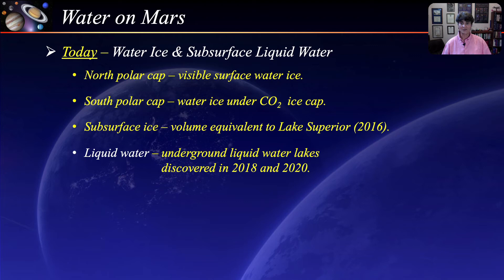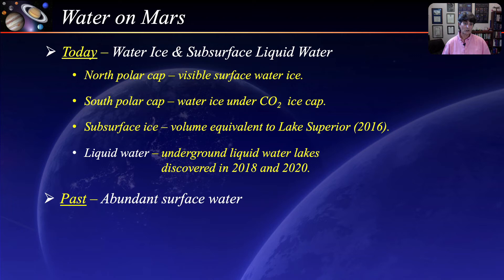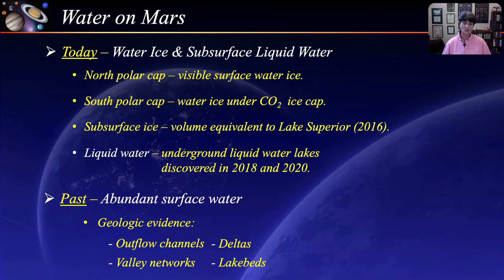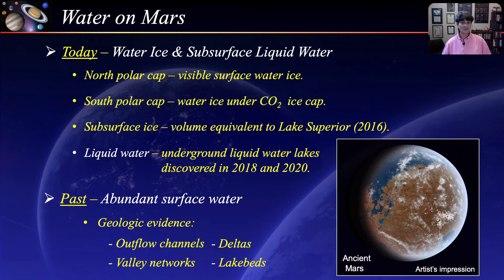Data suggests that in the very distant past, about three billion years ago, surface water was abundant. Geological evidence of past water is supported by surface features such as outflow channels, valley networks, deltas, and lake beds. This is an artist's impression of what ancient Mars may have looked like. Understanding water on Mars is vital to assess the planet's potential for harboring life and providing resources for future human exploration.